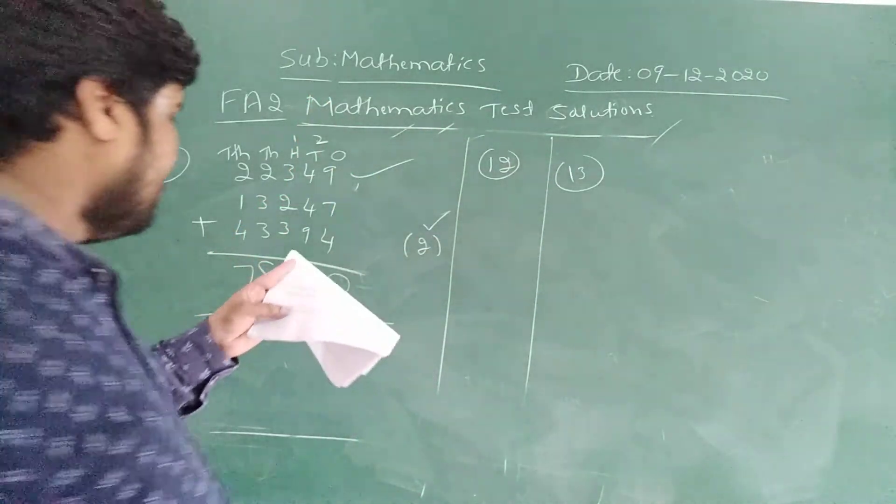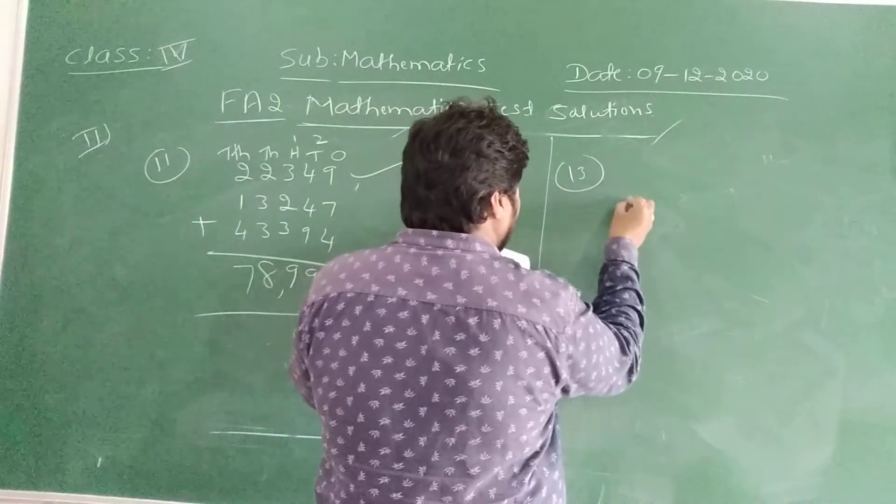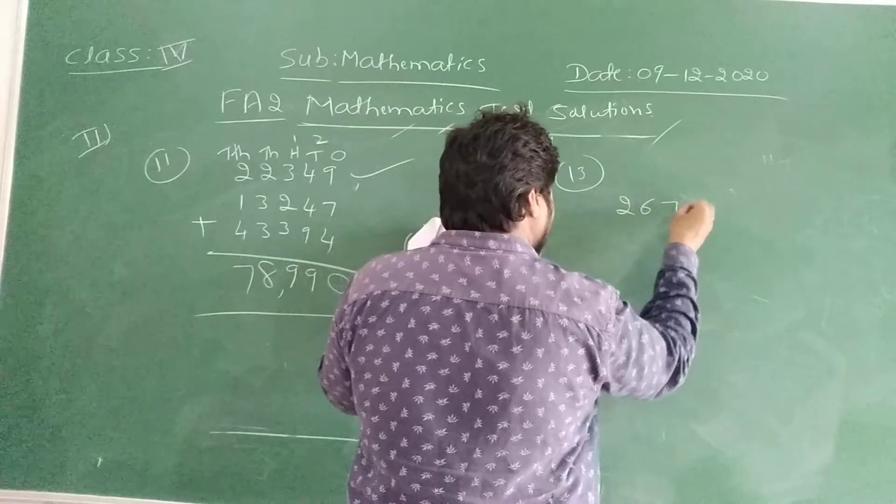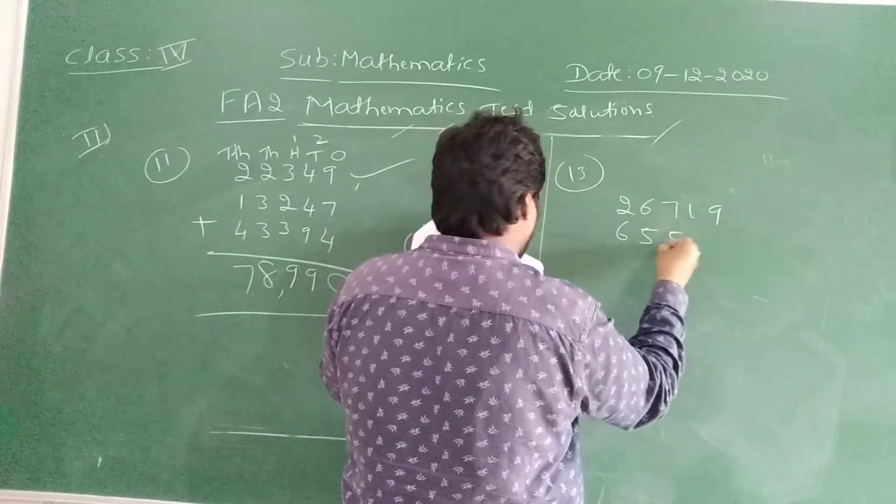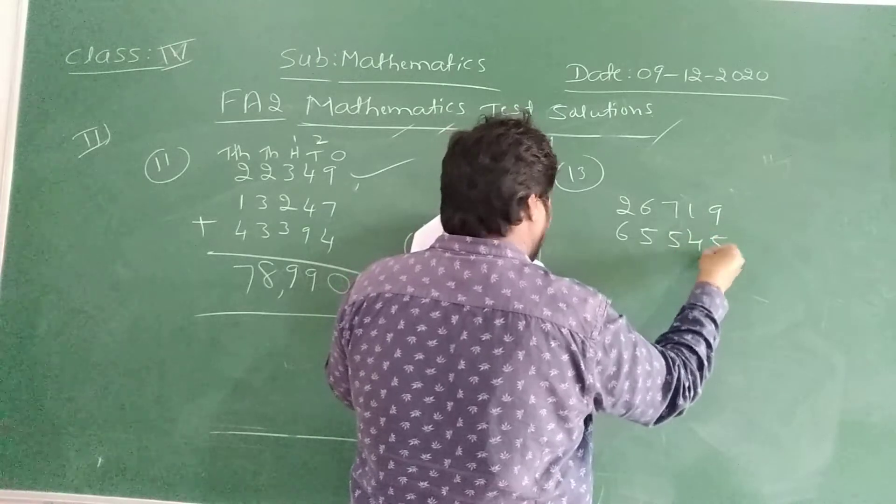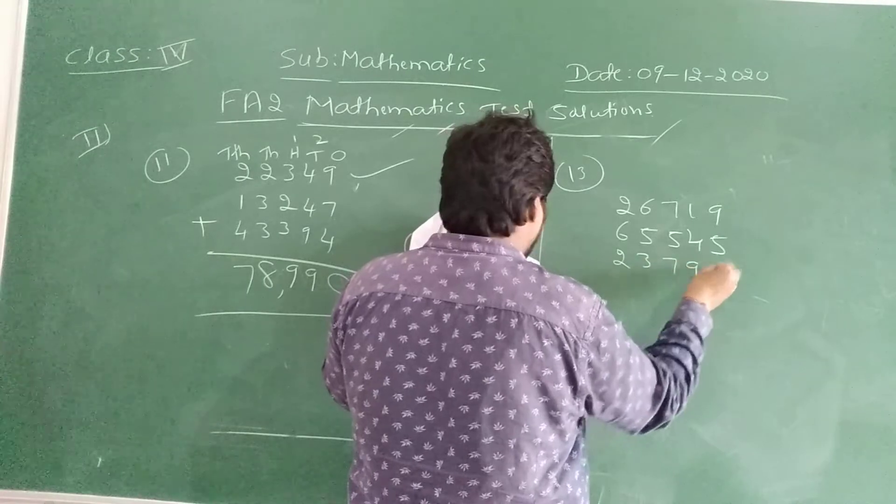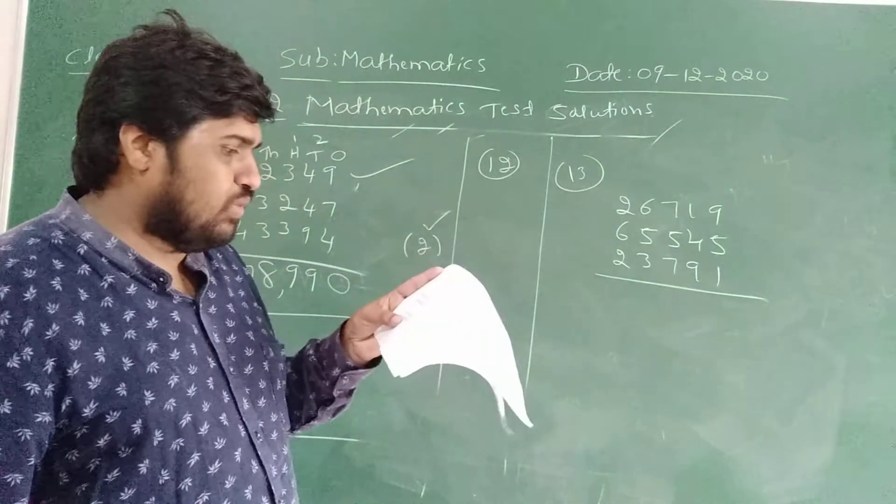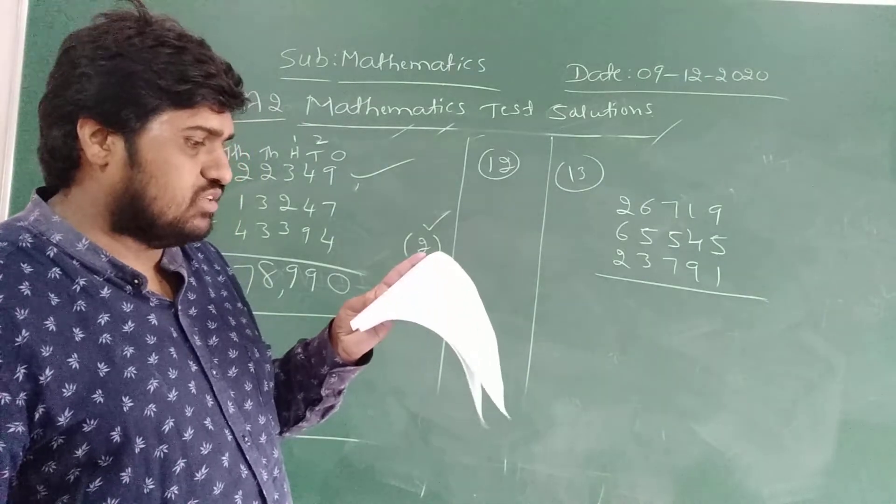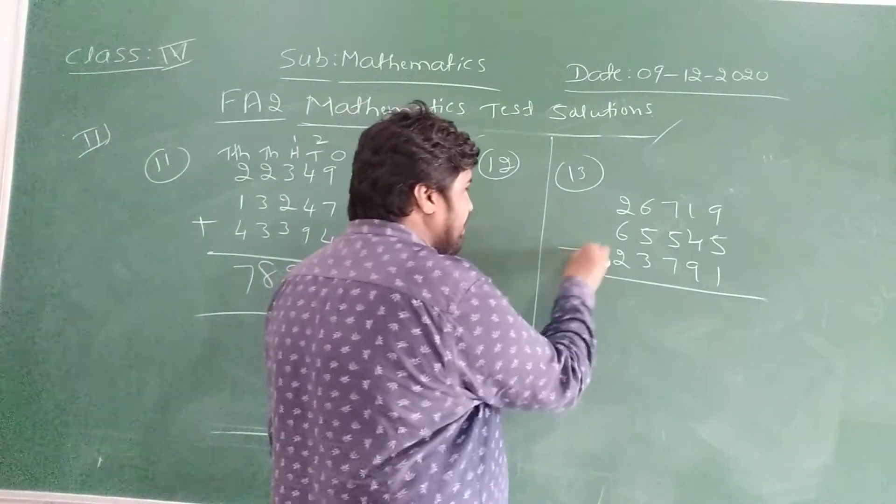Next question number 13. A man owns 3 orchards, that is first one is 26,719, second one is 65,545, third one is 23,791. Find the total number of fruits picked. We are going to add. For that, first 1, 10, 100, 1000, 10,000.